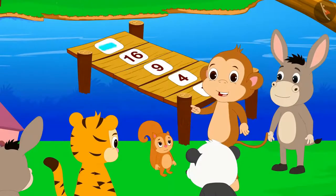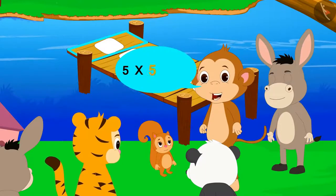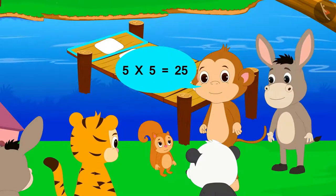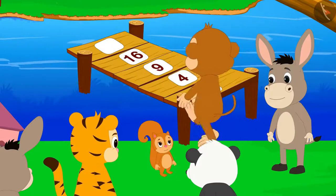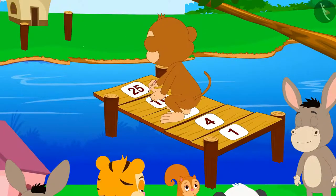That would mean the number written on this fifth plank would be 5 times 5, 25. Saying this, Babban immediately wrote 25 on the fifth plank.